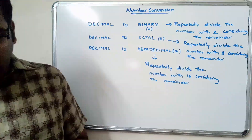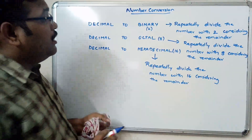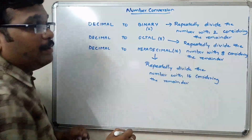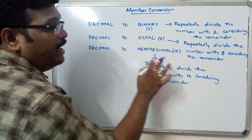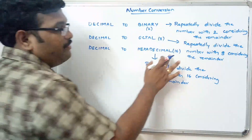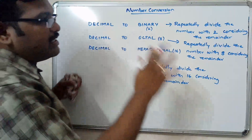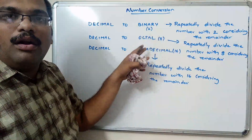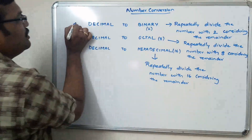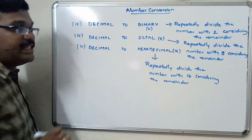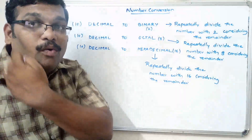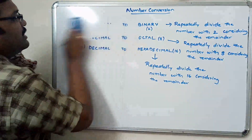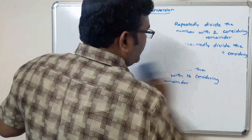We divide by the corresponding base value. If it is a binary conversion, we divide the number by 2. If it is an octal conversion, we divide the number by 8. If it is a hexadecimal conversion, we divide by 16. This is how we convert decimal to binary, octal, or hexadecimal. Now we will see one by one how a decimal can be converted to binary, then octal and hexadecimal.